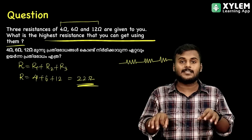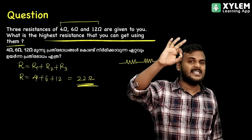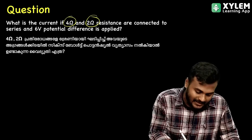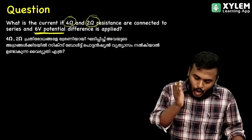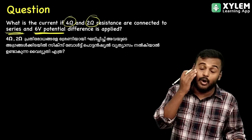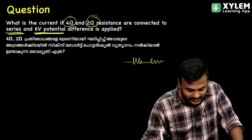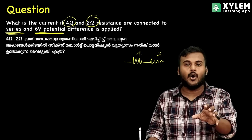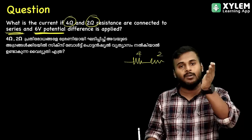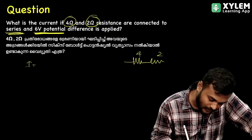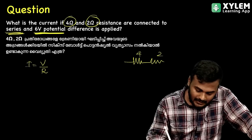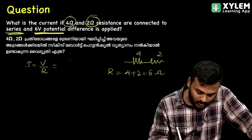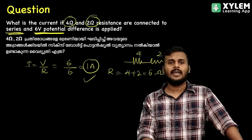You can find the highest resistance and lowest resistance. What is the current if 4 ohm and 2 ohm resistance is connected to 6V potential difference? Very simple. The current: I equal to V by R. We add R: 4 plus 2 equal to 6 ohm. Voltage is already 6. So 6 by 6 is equal to 1A. Ampere is unique.